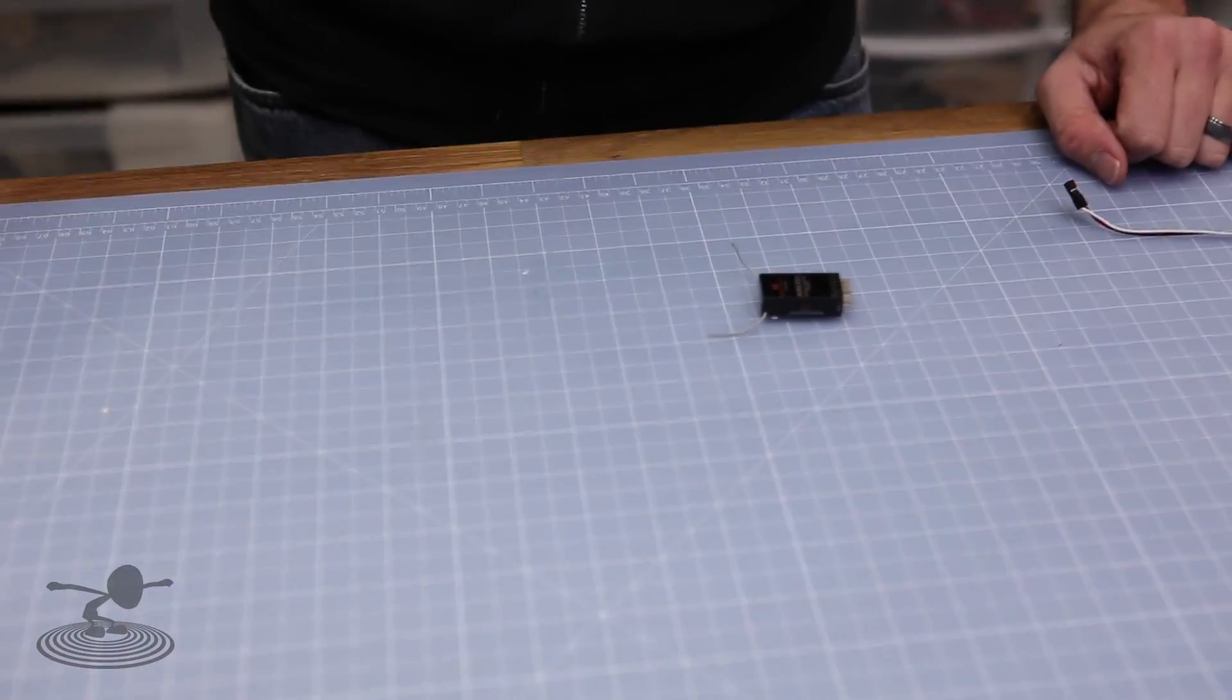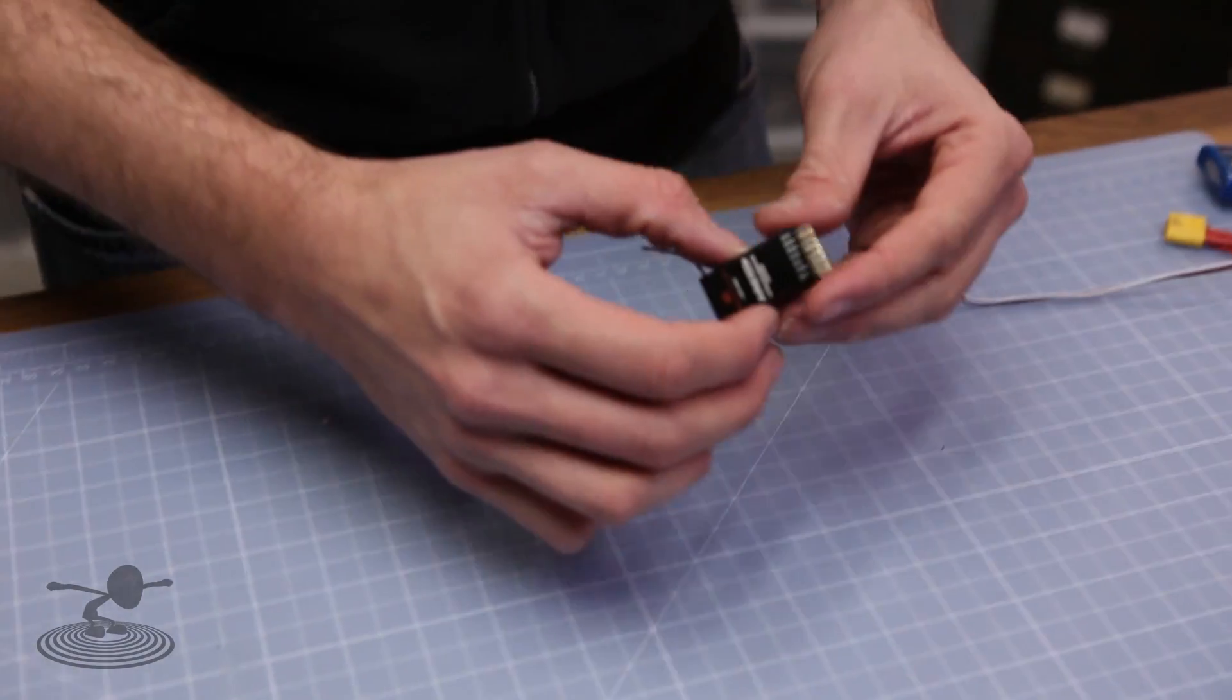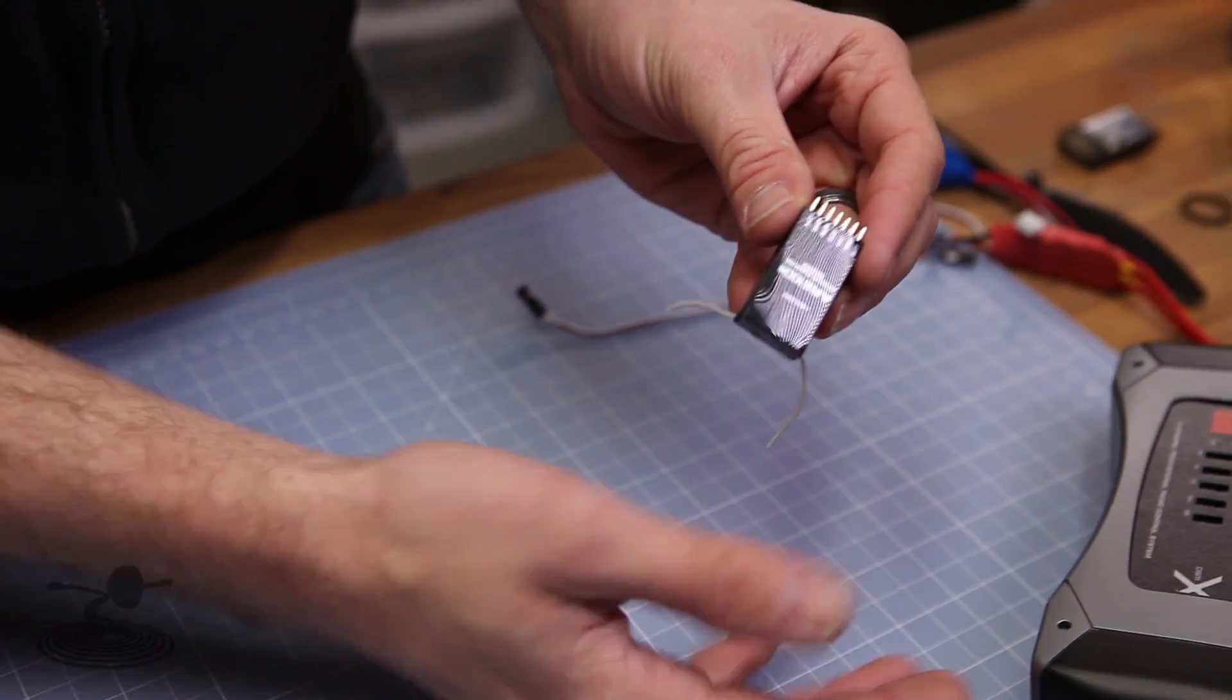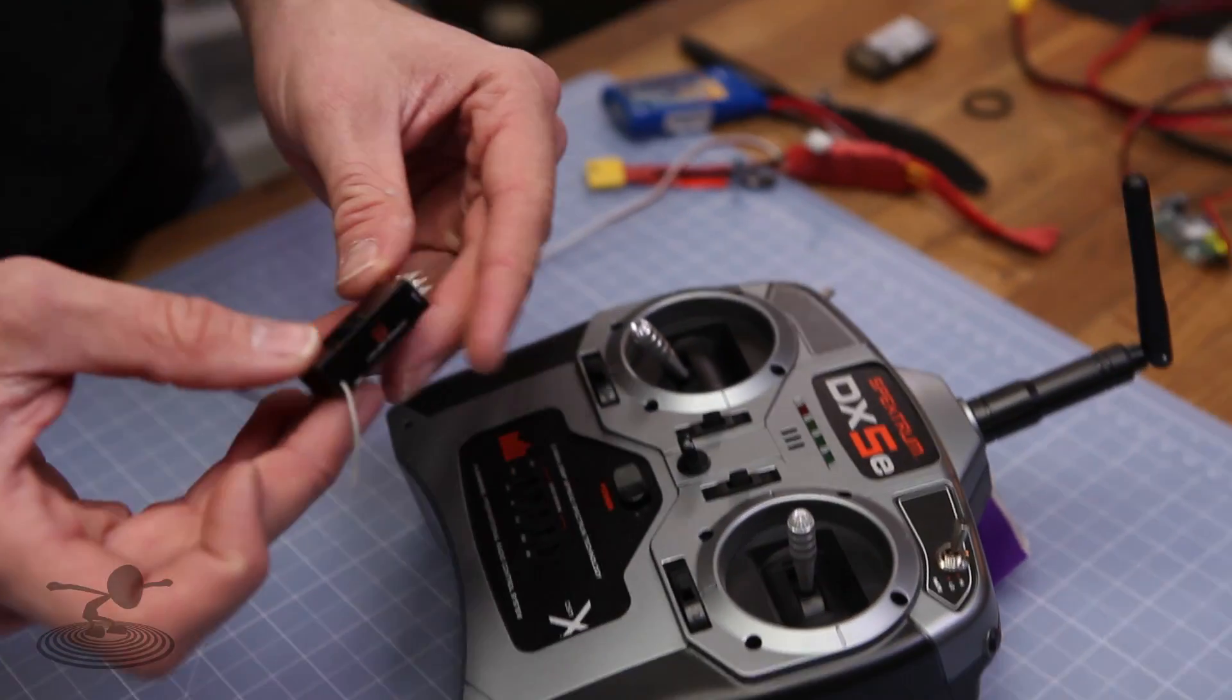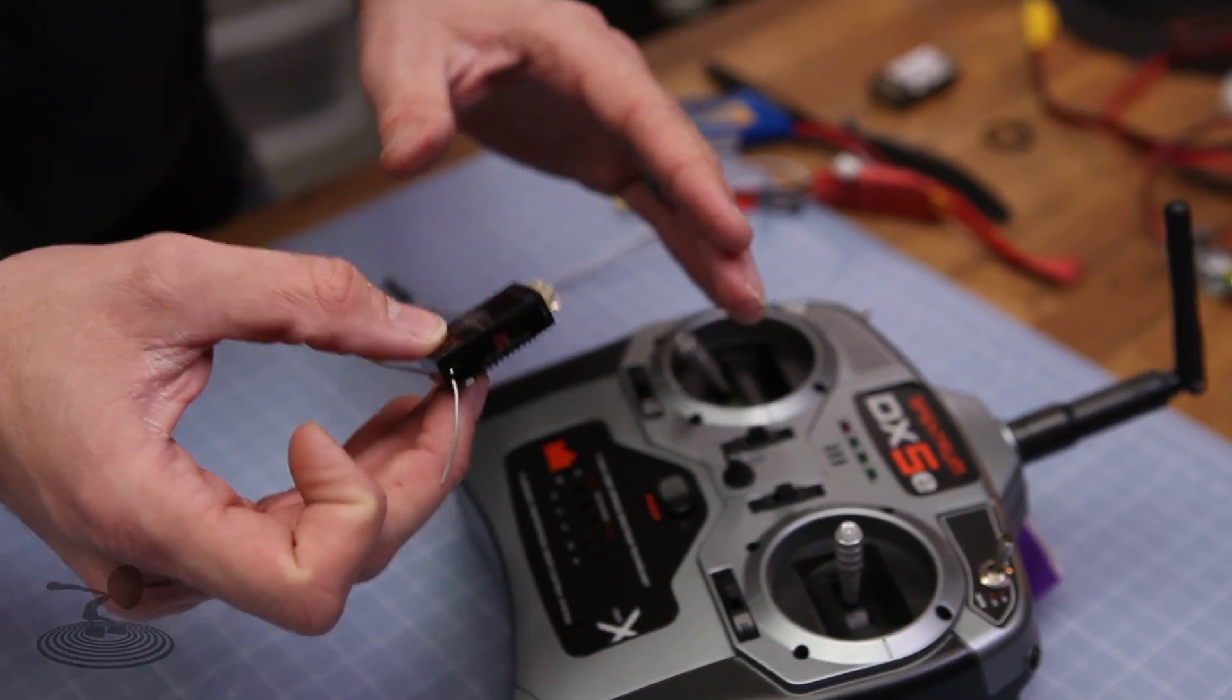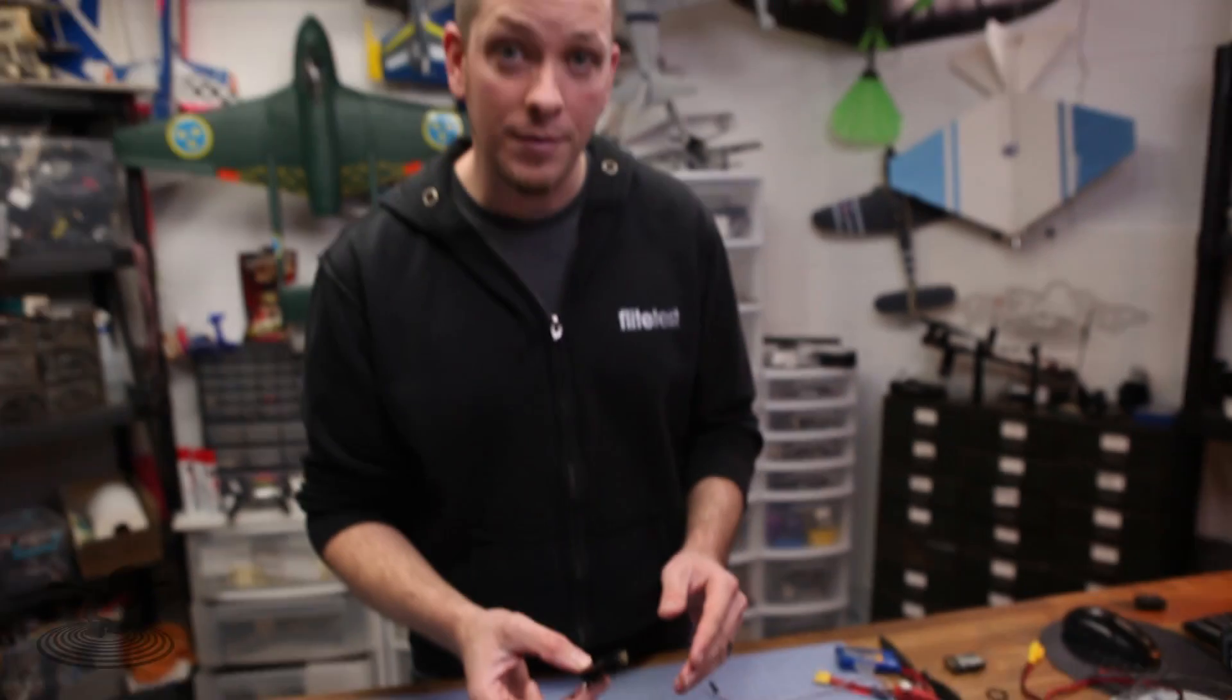Our first step is to put the pod with the motor aside for the moment, because the first thing we need to do is get the receiver to talk to the transmitter. Now we like these little Spectrum guys because they're very easy to bind and it's also very easy to demonstrate the principles of binding, but every manufacturer has a different way of doing it. Futaba has a push button, Airtronics is different, so always read your specifications from your manufacturer on how to make your receiver talk to your transmitter.